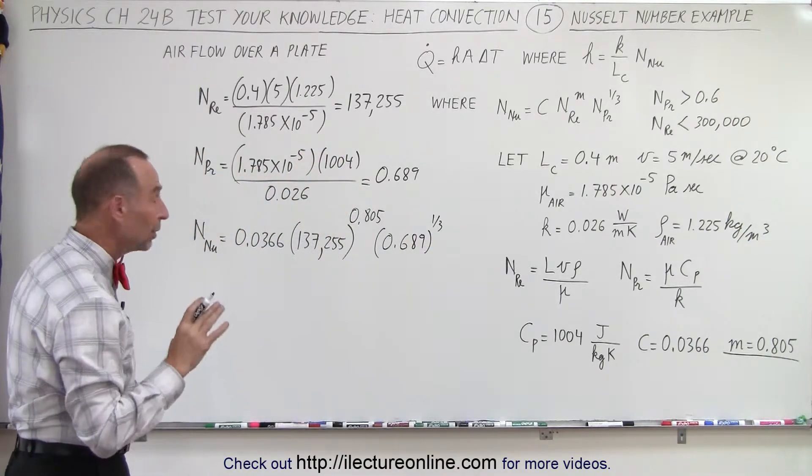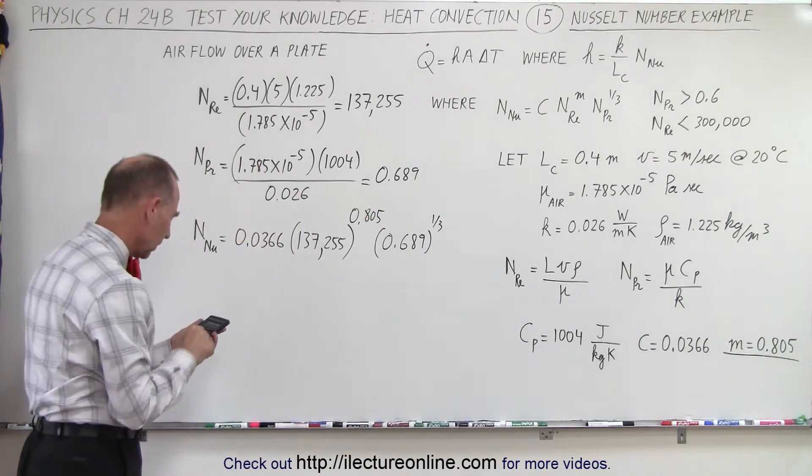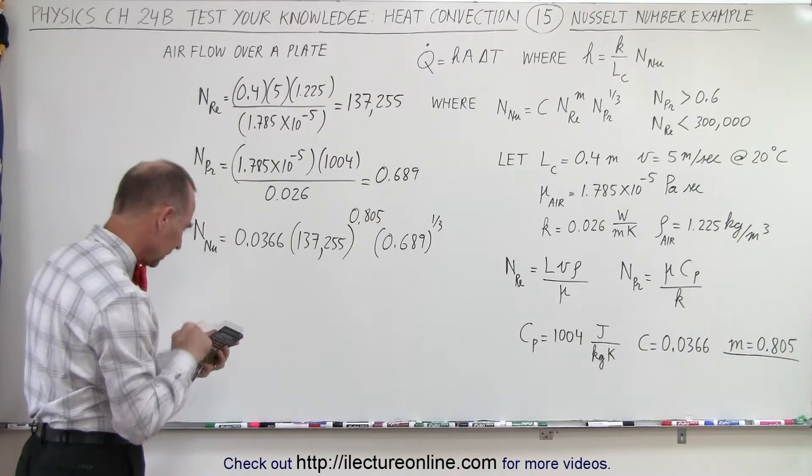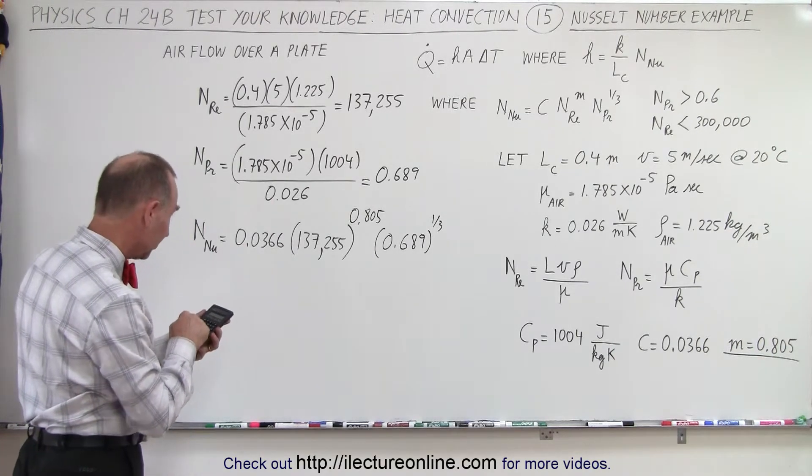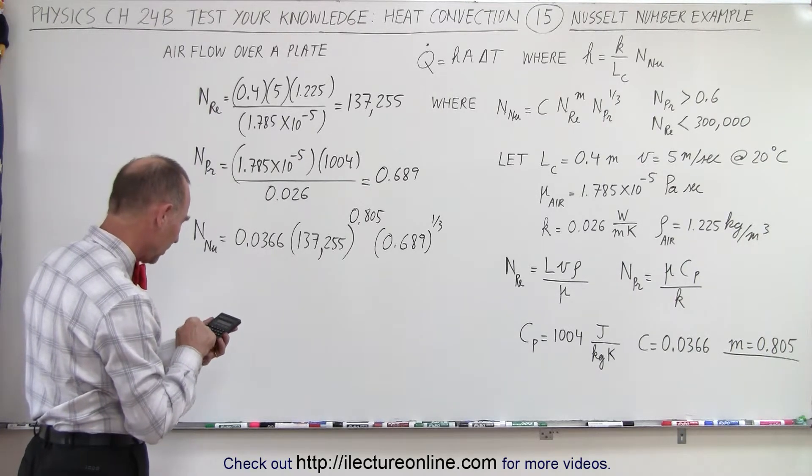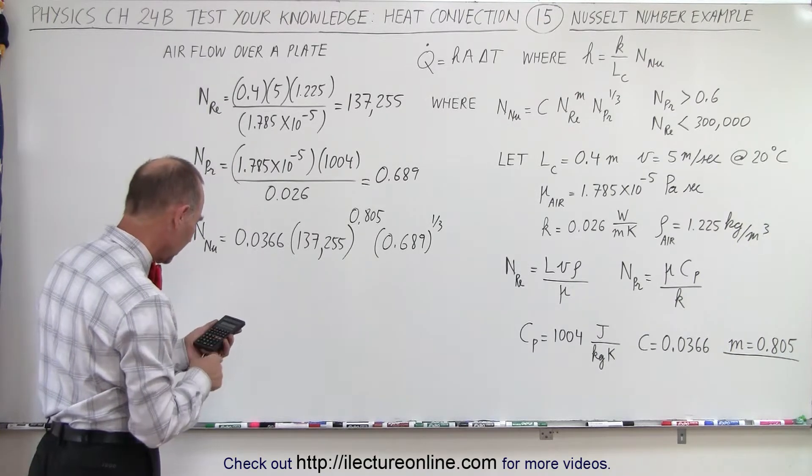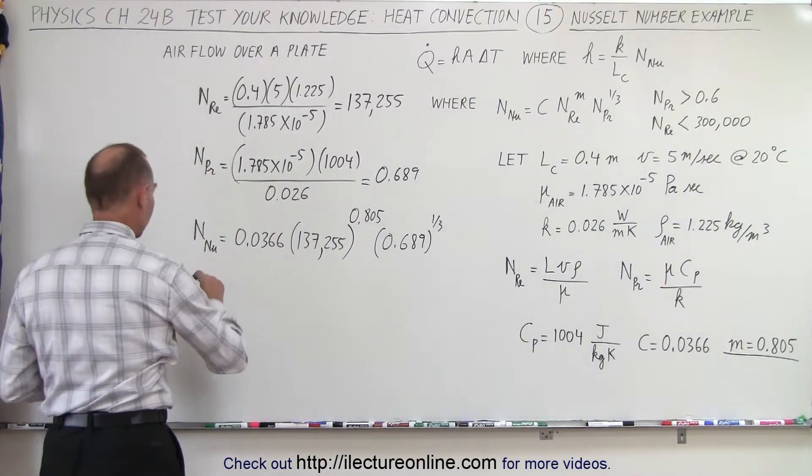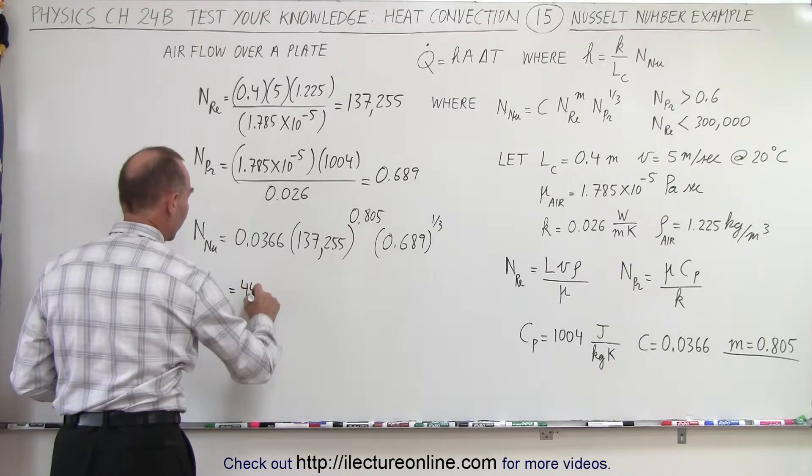All right. Given all that, we're now able to calculate the Nusselt number. So we take that to the 1 third power, multiply it times 137,255 raised to the 0.805 power, then multiply it times 0.0366, and we get 442. So it gives us a Nusselt number of 442.